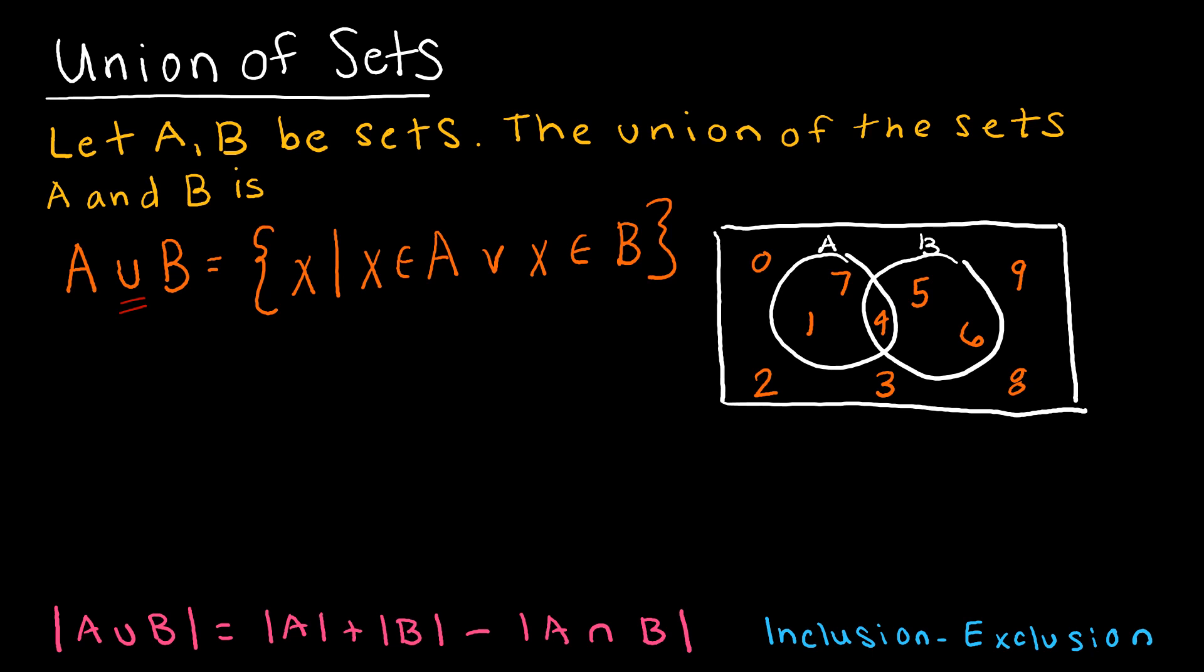So here in the Venn diagram that I have drawn, we can see that set A is the set that includes the elements 1, 4, and 7. And set B, because that was everything contained in the set A circle, 1, 4, 7. And in set B, it contains the elements 4, 5, and 6.